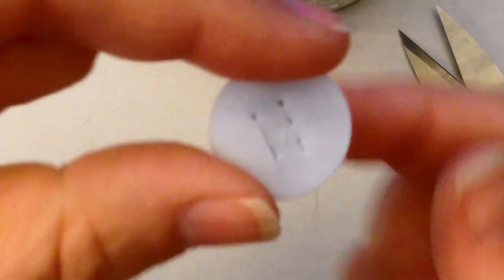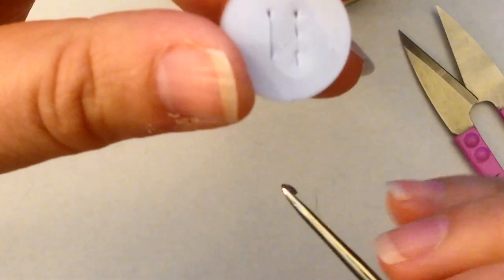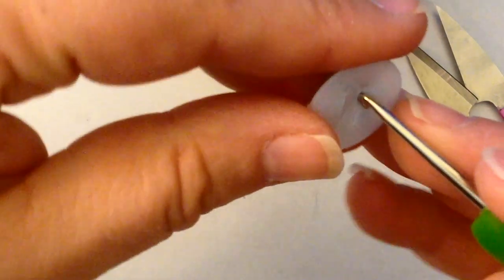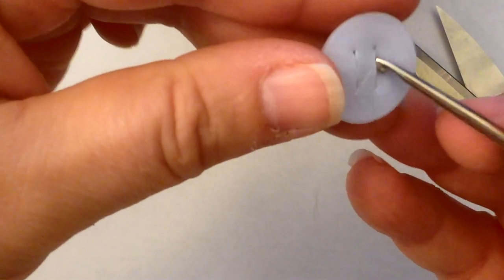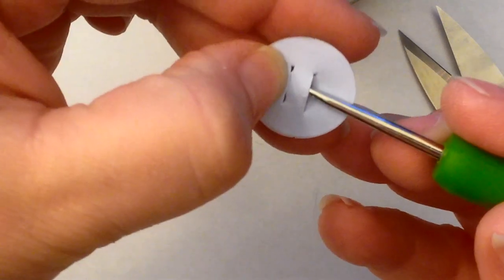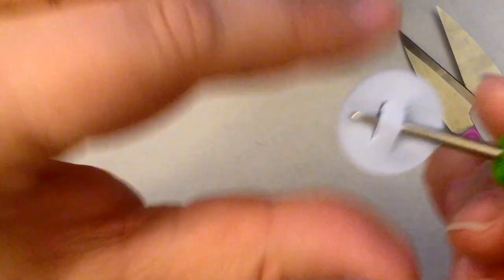Now what you need to do - and please if you're clumsy, get somebody else to do it - you're going to put your hook under one and poke it out the other side. That's why I said don't make it too skinny because that will just break.